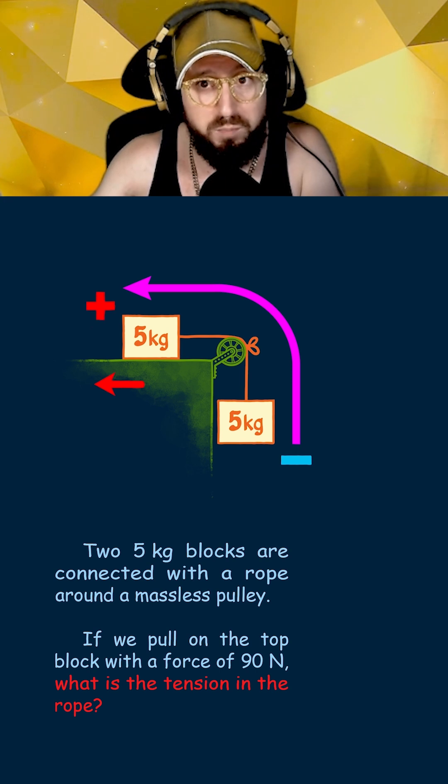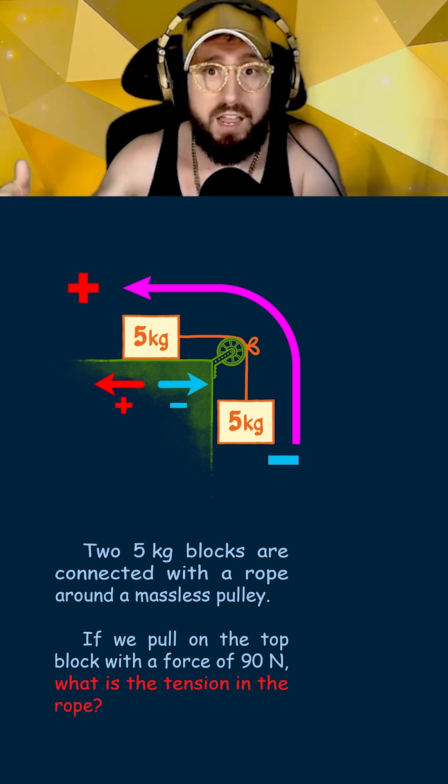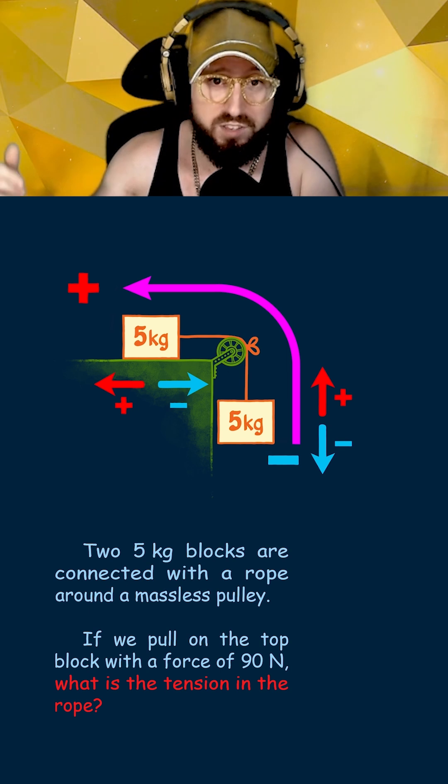So for the first block, this means that the left is positive and the right is negative. Looking at the hanging block, this means that up is positive and down is negative.